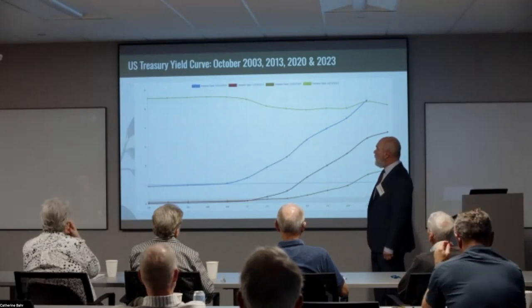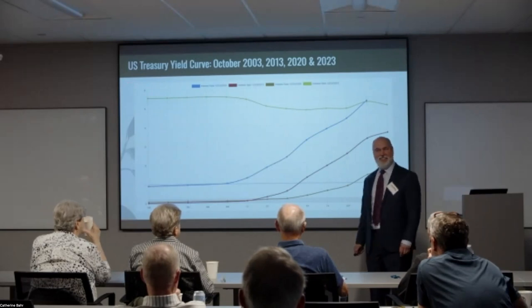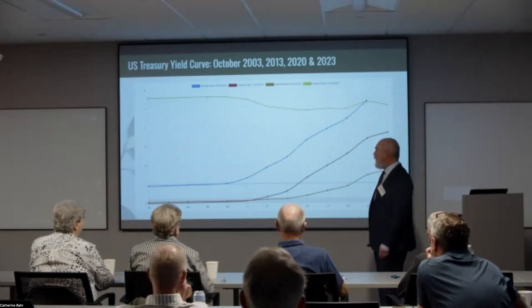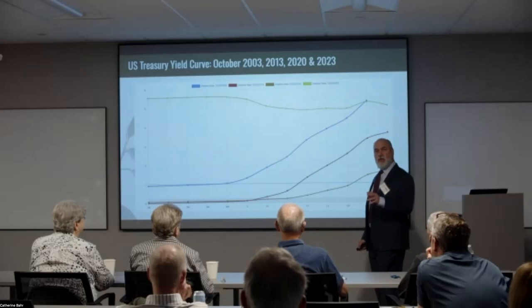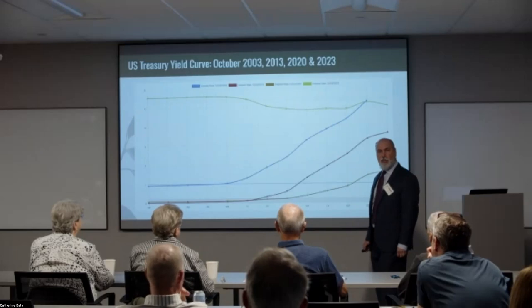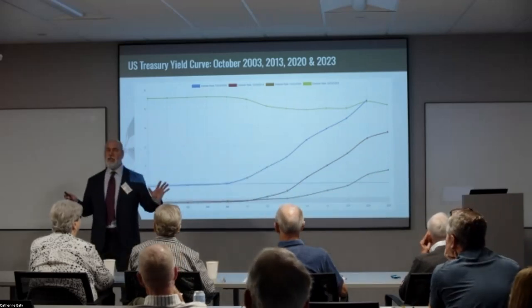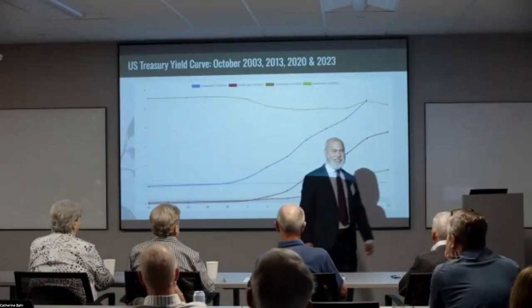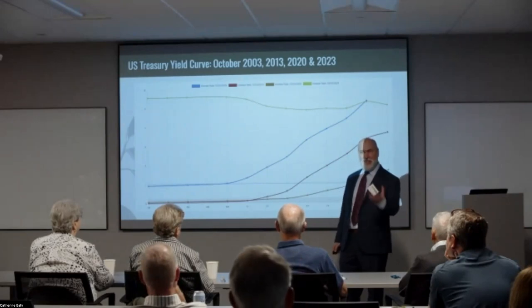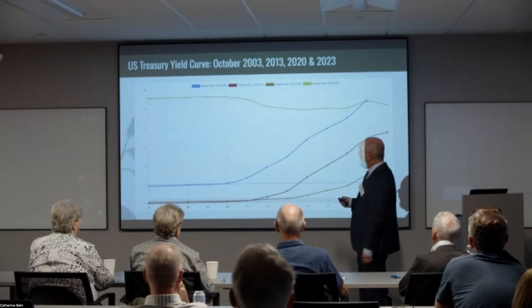Earlier this year we attended a JP Morgan luncheon. One of their bond managers who manages a $25 billion bond fund said in April, 'We think this is the time to extend duration' — to lock in longer-term rates because they expected rates would come down. JC and I left and said the economy is really strong, job market is strong — I'm having trouble getting a plumber. And so we stuck to the shorter end of the curve.